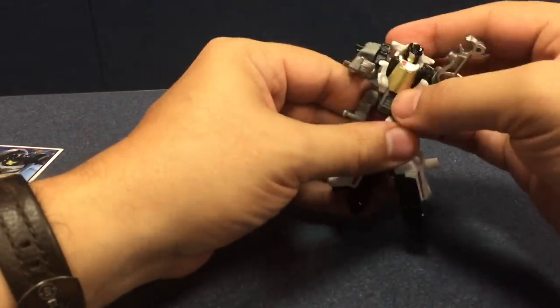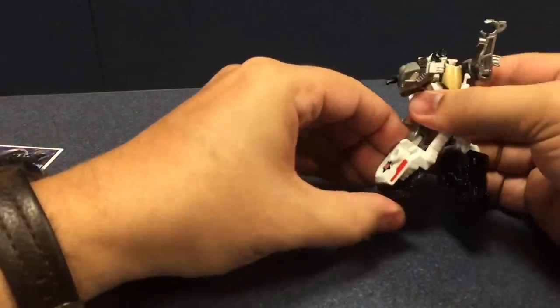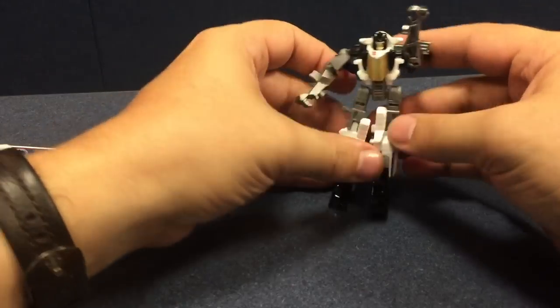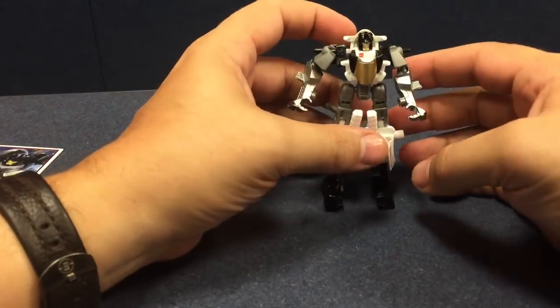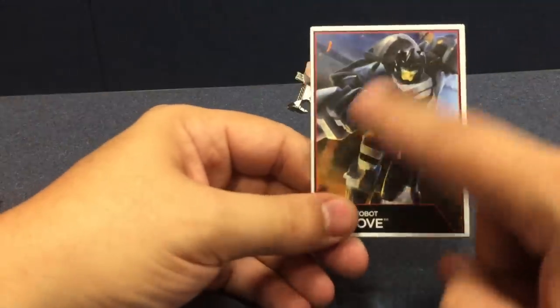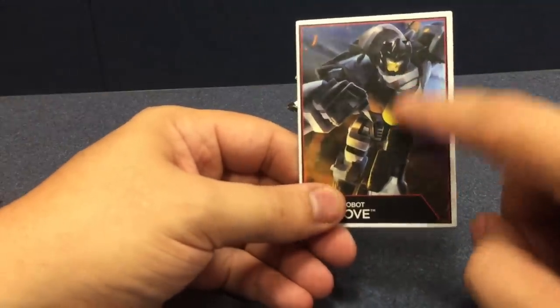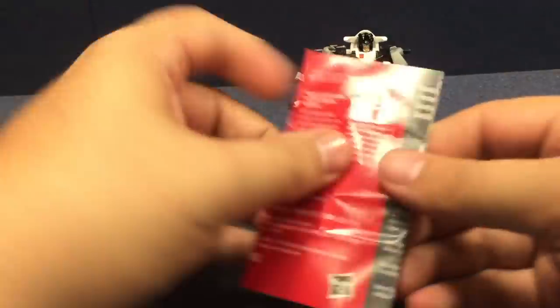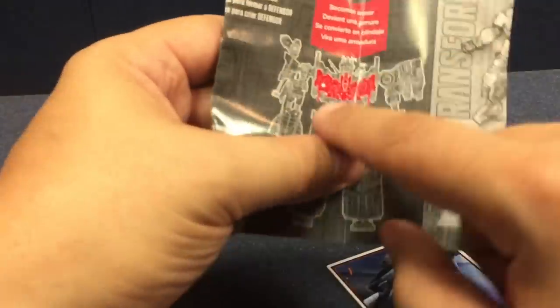So yeah, basic, simple, fun Legends Groove. He comes with his bio card. Again, Legends inspired art. I don't know if that was actually from the game because I haven't seen it recently. And his little folded up. See, there he is all folded up for his torso mode.